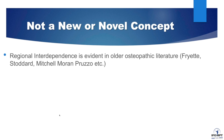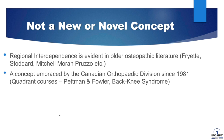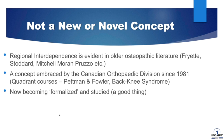This concept is not new and it's not novel. We find evidence of regional interdependence in the older osteopathic literature of over 120 years ago, and it certainly has been a concept embraced by the Canadian Orthopedic Division since the onset of their Quadrant of Courses in the early 1980s by Earl Kutman and Cliff Fowler. Back at that time, Cliff and Earl were also talking about the back-knee syndrome — the relationship of impairments in the back, particularly around L3-4, contributing to patellar knee pain. It's a concept we have been interested in in Canada for a long, long time, and now it's becoming formalized and studied, which is a good thing.